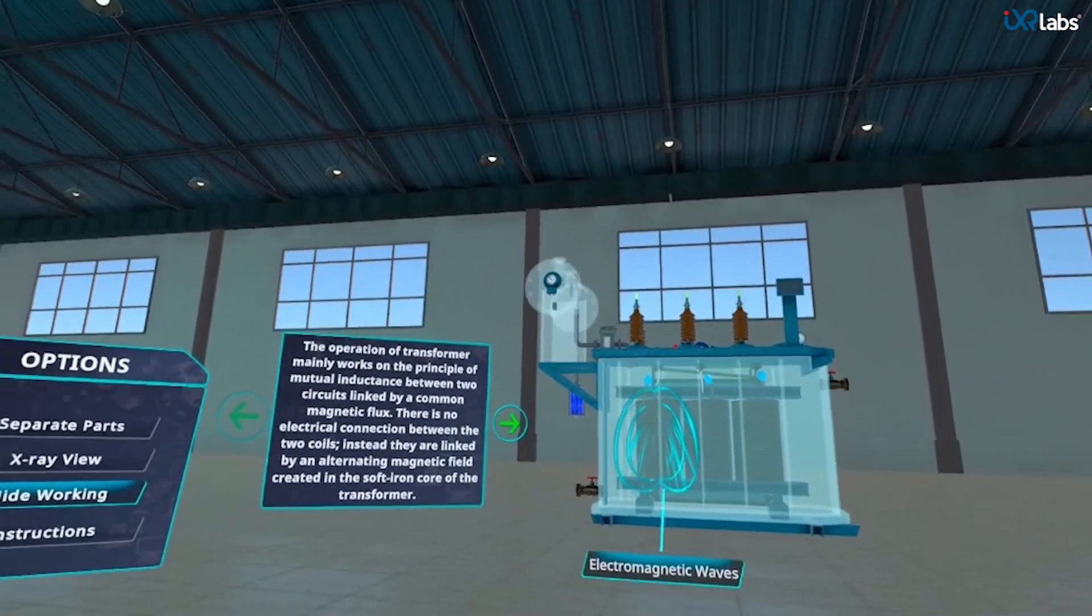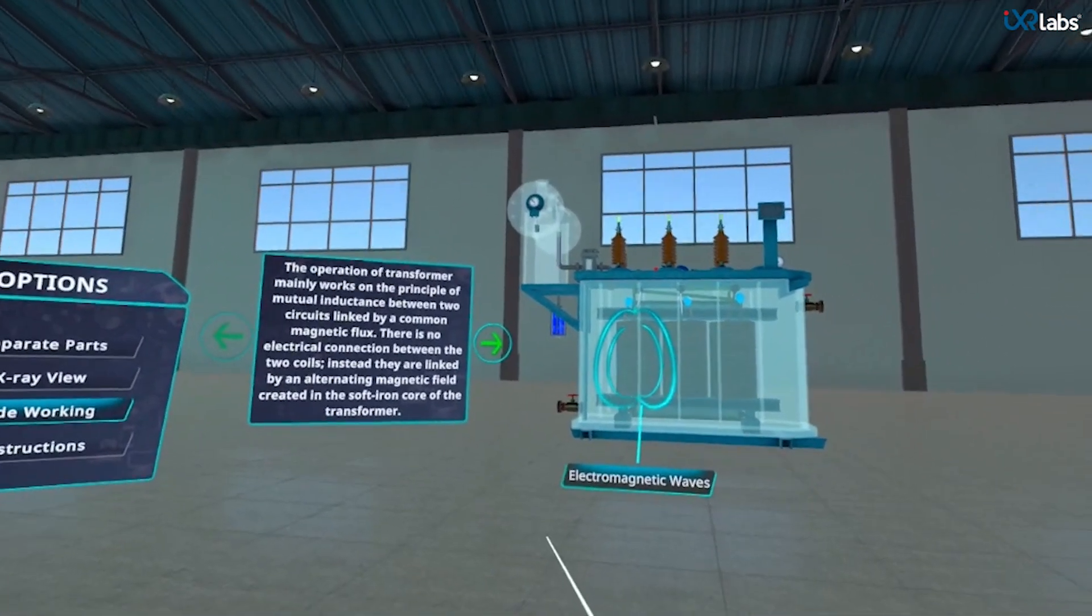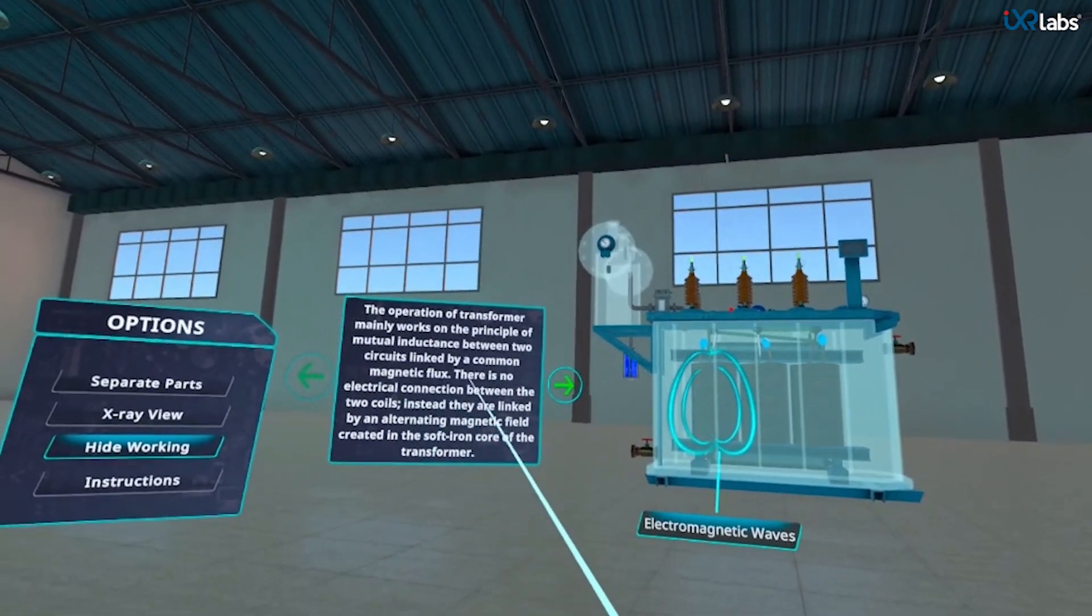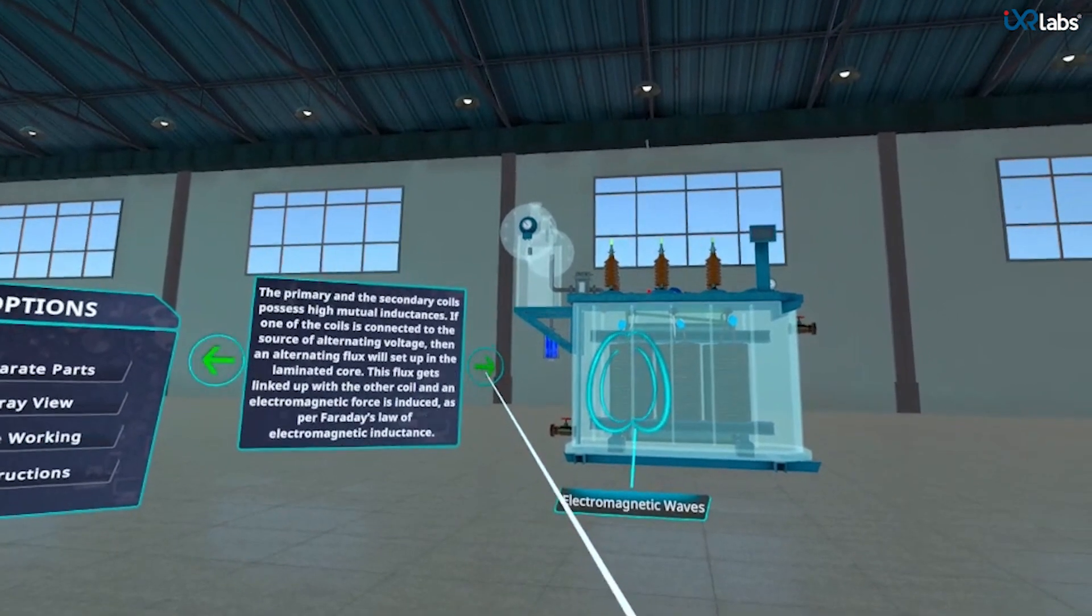We can see electromagnetic waves inside the transformer and a prompt tells us about the principle on which a transformer works, that is mutual inductance between two circuits linked by a common magnetic flux.